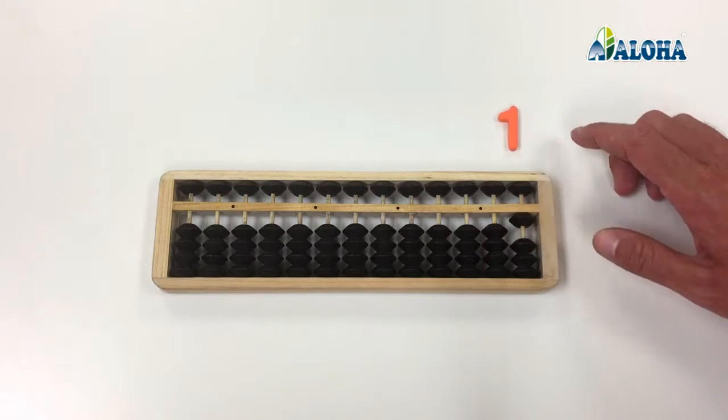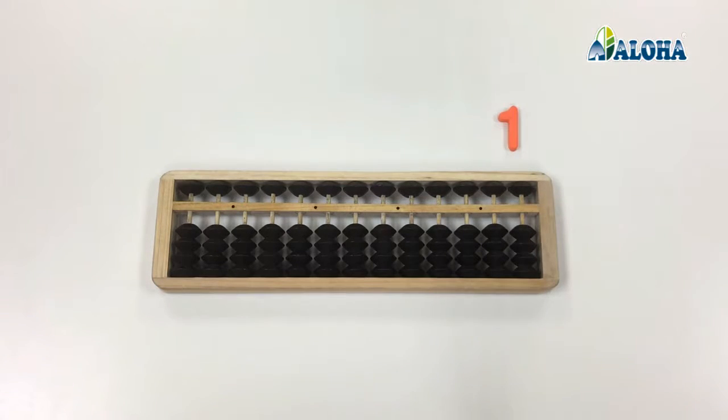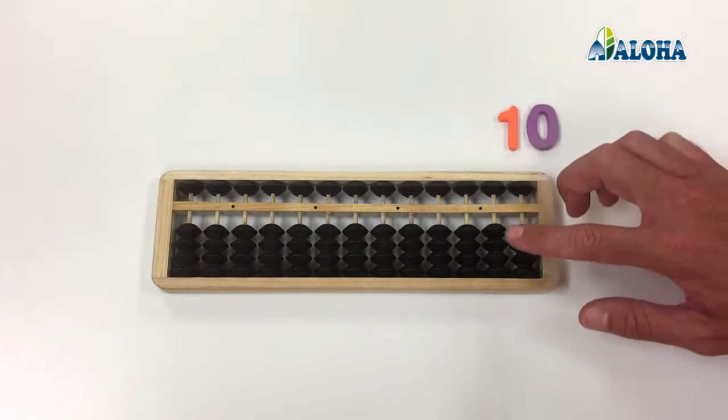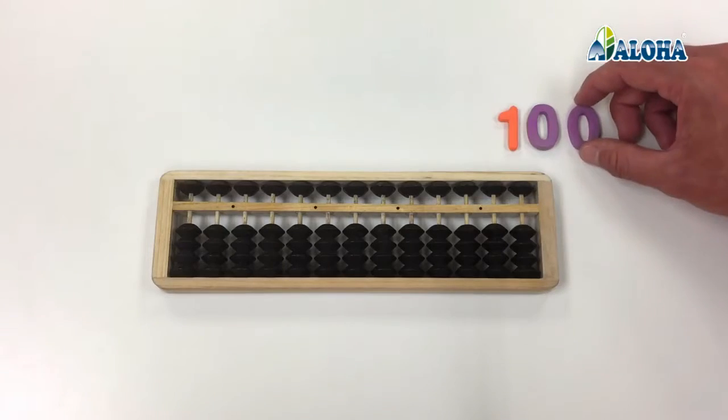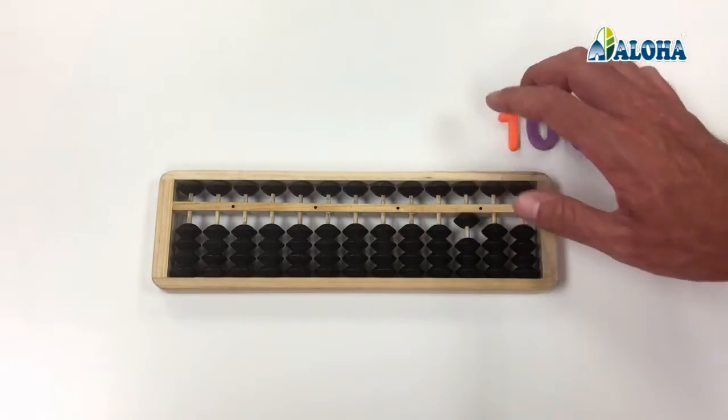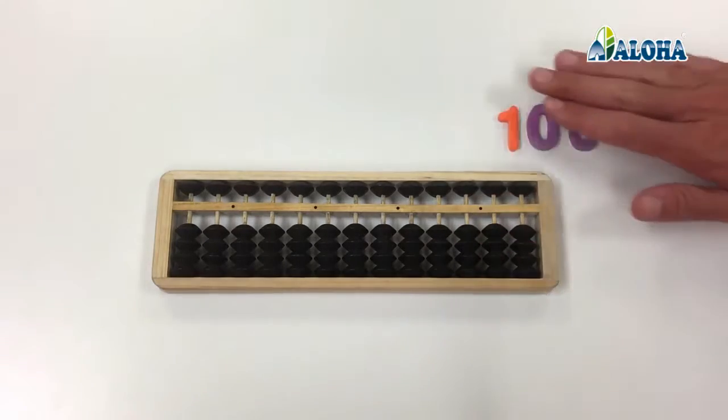On each column, the lower beads are worth a unit of its value. Thus, in the first column, the units, each bead is worth 1. In the second column, the tens, each bead is worth 10. In the third column, the hundreds, each bead is worth 100, and so on.